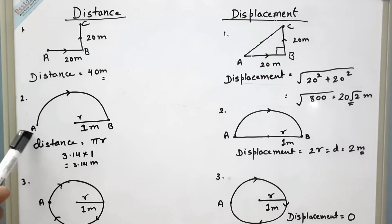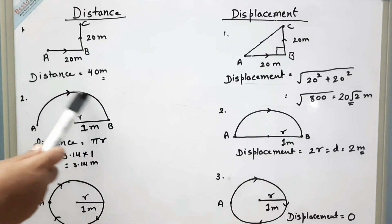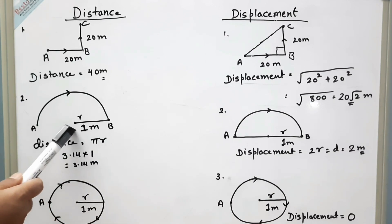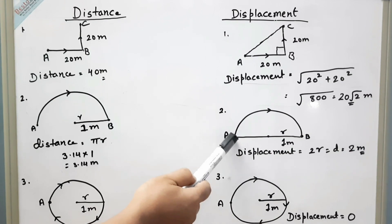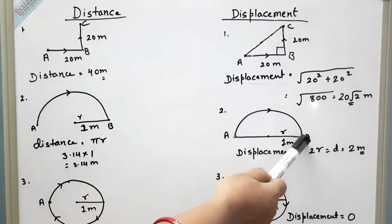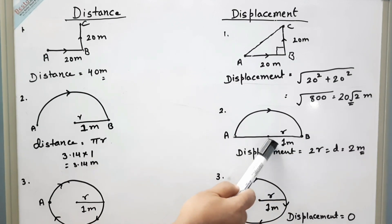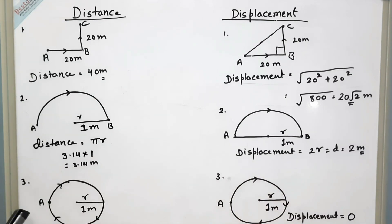In another case, a particle starts from A and reaches B along a semicircular path. The distance equals half the circumference, that is pi r, which equals 3.14 meters since the radius is 1 meter. The displacement is the straight-line distance from A to B, which is the diameter of the semicircle, equal to 2 meters.